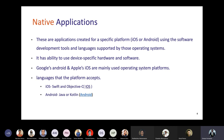Google owns Android and Apple owns iOS — these are the main players in this industry. When implementing native applications, different programming languages are required. For Android, you use Java or Kotlin; for iOS, you use Swift or Objective-C.